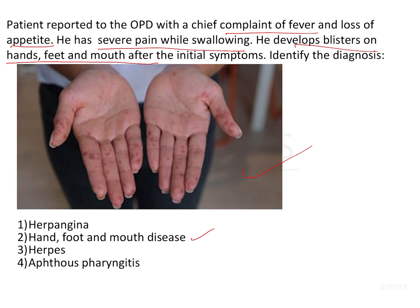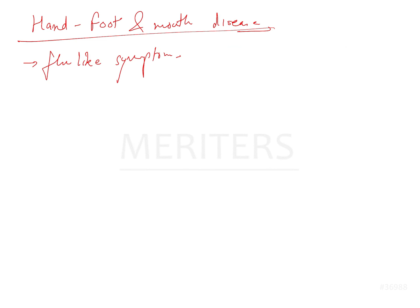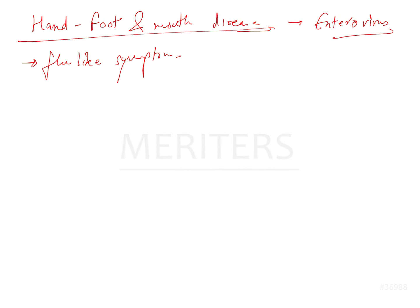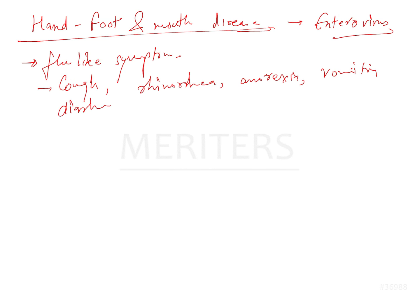Option two — Hand, Foot, and Mouth Disease — is the correct answer. This disease is the best-known presentation of enterovirus; it is an enterovirus infection. Along with herpangina, skin rash, and oral lesions associated with flu-like symptoms, other accompanying symptoms include cough, rhinorrhea, anorexia, vomiting, diarrhea, myalgia, and headache.